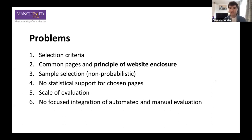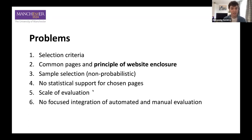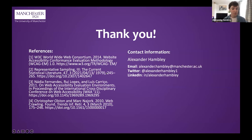There's no statistical support for the pages chosen. The evaluation of every page in a sample utilizes limited resources from valuable auditors, and the workload in evaluating the number of pages is quite high. Lastly, there's no focused integration of automated and manual evaluation. We think a focused approach that can optimize both auditors and tools would be very useful. Thanks for listening — I'm open to any questions.